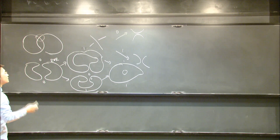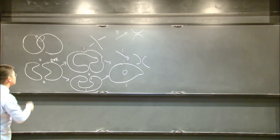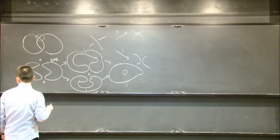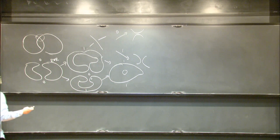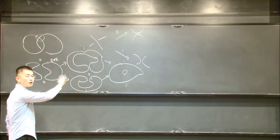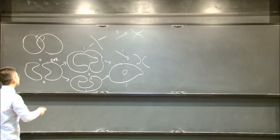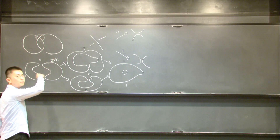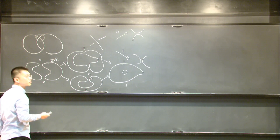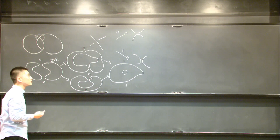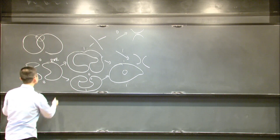The point is that it's a completely combinatorial construction. It comes with two gradings: one is the homological grading, and the other comes from counting the number of components in the diagram, which gives the quantum grading, or the Q grading.